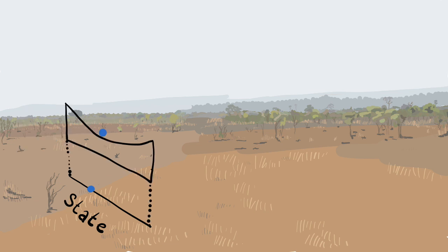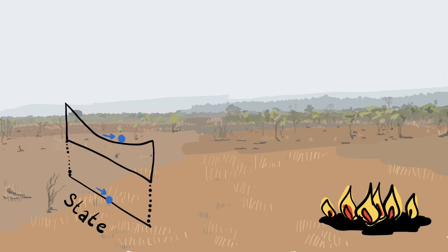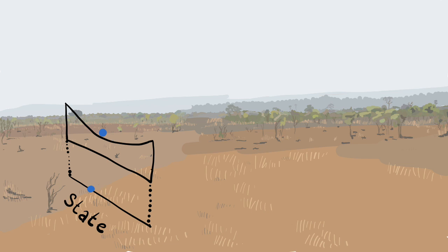This state is stable. This means that if we introduce a disturbance, the ecosystem will grow back to the way it was.